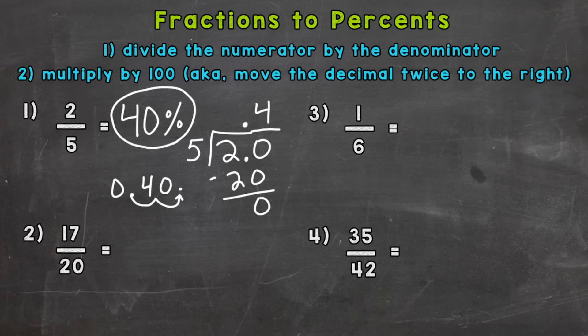Number two: 17/20. So 17 divided by 20 gives us 0.85. So that's step 1. Step 2: multiply by 100, move the decimal twice to the right: 1, 2. So the decimal is now at the end. 17/20 equals 85 percent.